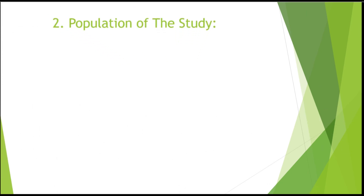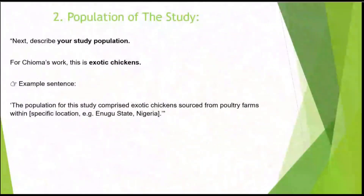The next thing you need to understand in your research methodology is what we call population of the study. Population of the study refers to the totality of all respondents to whom the findings of the study will be generalized. You must be able to provide the population of the study — the total number that makes up your study. Don't just get a random number; provide the actual population.